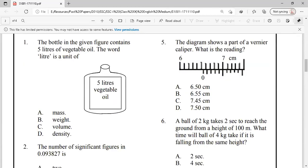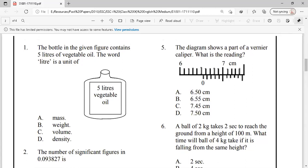So, let's solve this. Question number 1: The bottle in the given figure contains 5 liters of vegetable oil. The liter is a unit of which quantity? We know that liter is the unit of a quantity known as volume. So, option C is the right answer.